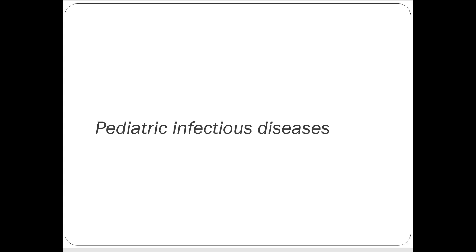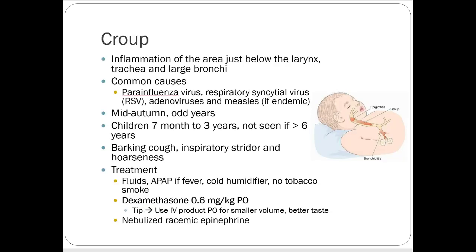Moving on to pediatric infectious diseases. Croup is an inflammation of the area just below the larynx, commonly caused virally, with cases typically seen in mid-autumn. It affects children from about seven months to three years — over six years old you probably won't see croup. Presentation includes a characteristic barking cough, inspiratory stridor, and hoarseness. Nurses often say a child has a 'croupy cough' — once you hear it you remember what it sounds like.